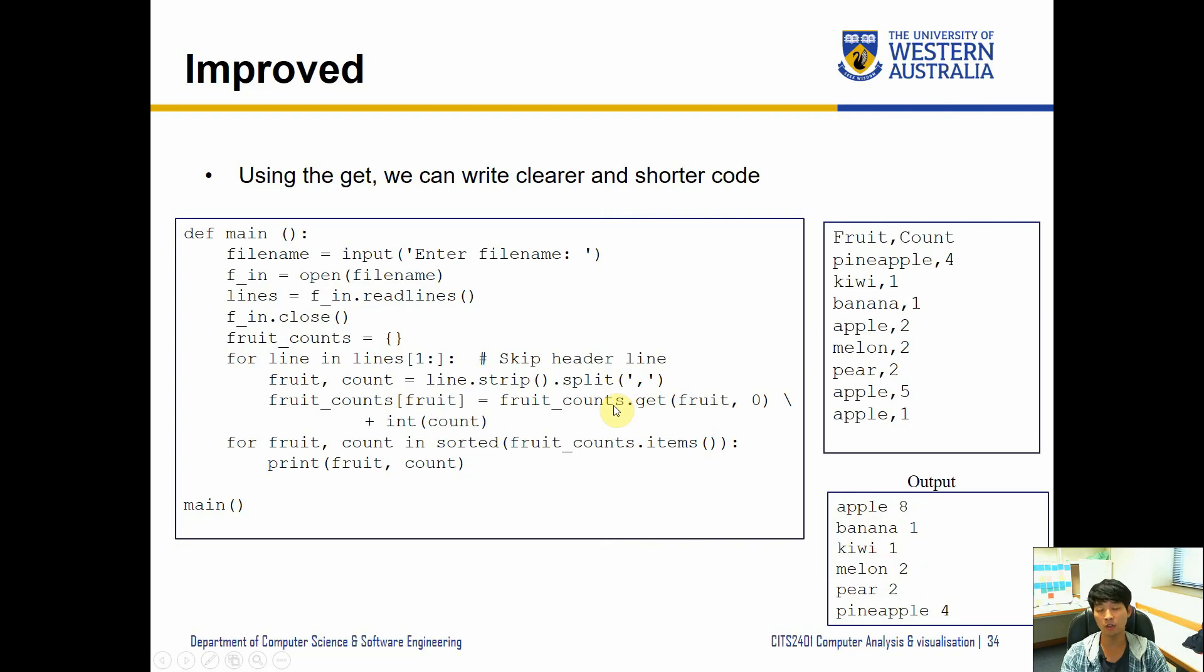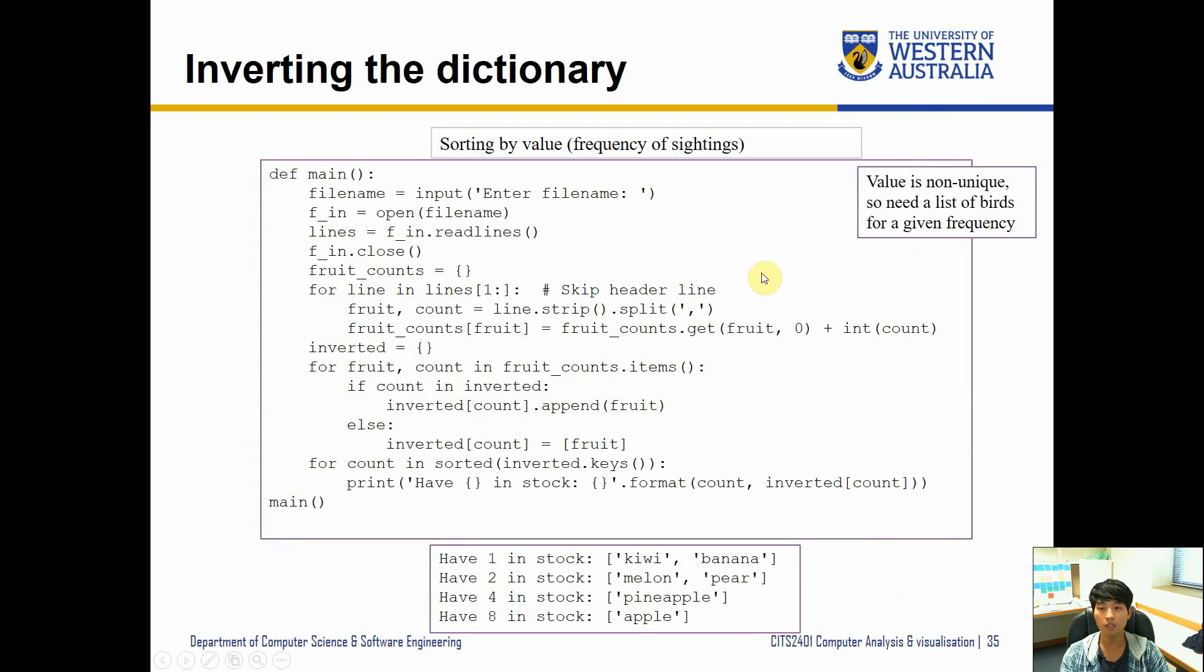So the next example is about inverting the dictionary. So normally what we have is a unique key and then values that can be duplicate amongst multiple keys. But sometimes we want to sort by, for example, frequency of what we've seen inside our stock and then listed based on the stock size.